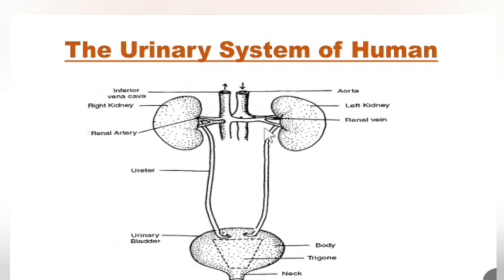Both kidneys face the vertebral column. You can see the renal arteries entering the kidney — this is a branch coming from the dorsal aorta.